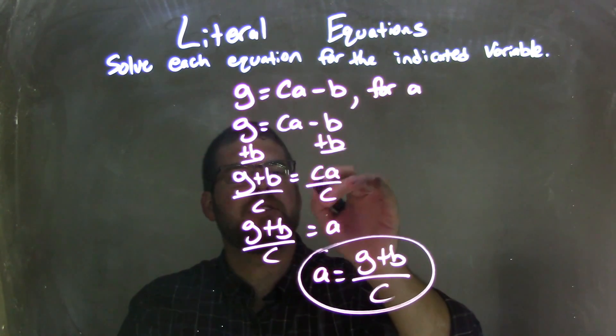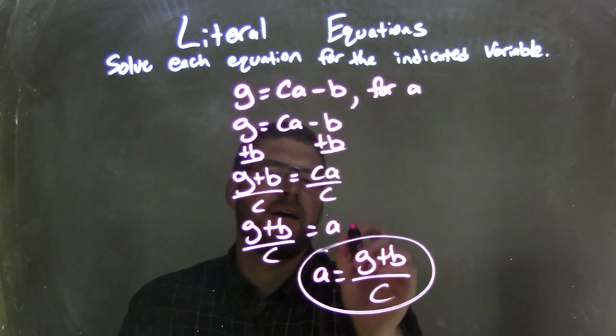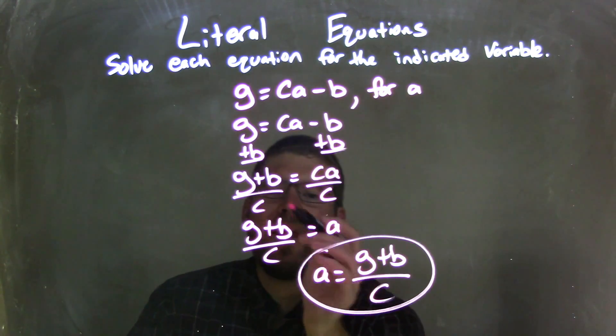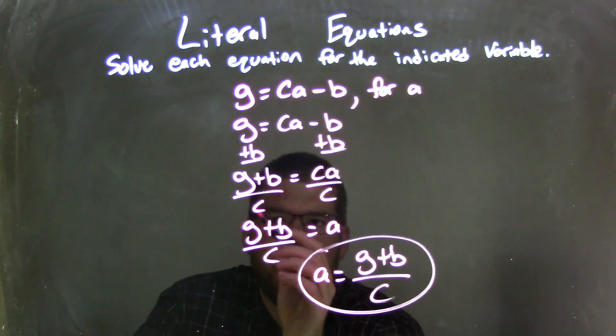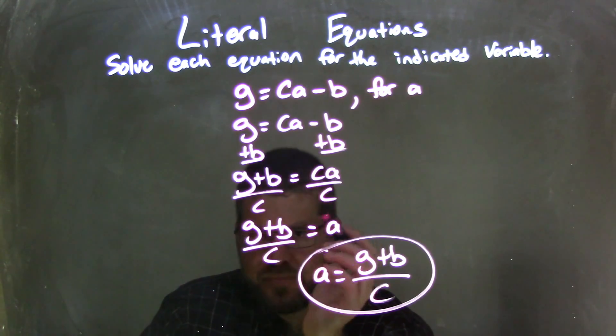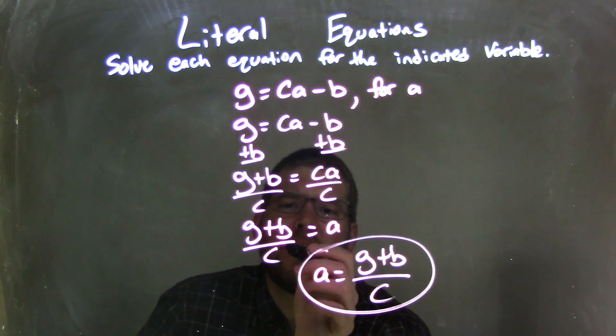So multiplication's inverse is division, so I divided C to both sides, eliminated C on the right, giving me A by itself on the right. And then I had G plus B over C, and that's all G plus B all over C, or divided by C, right there on the left.